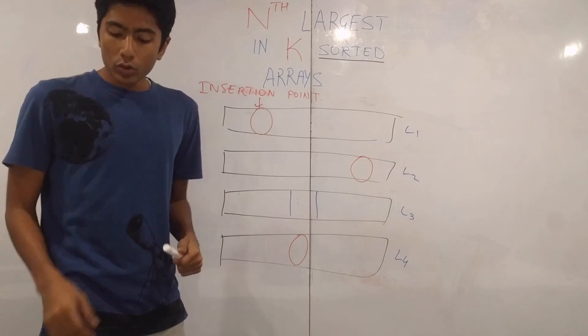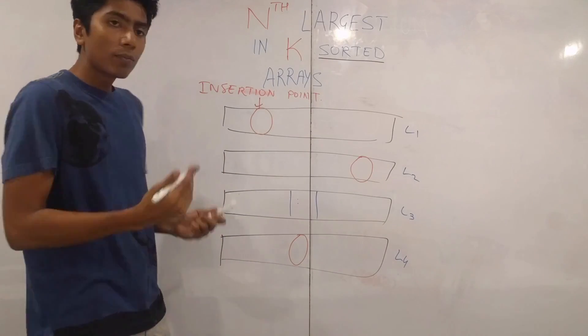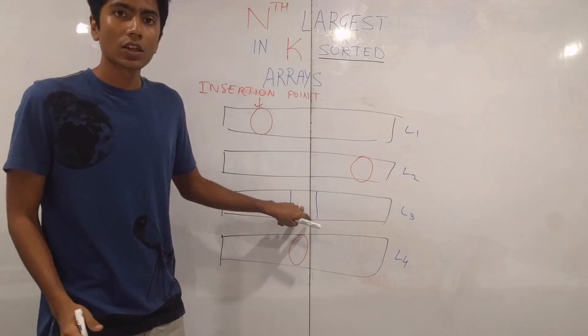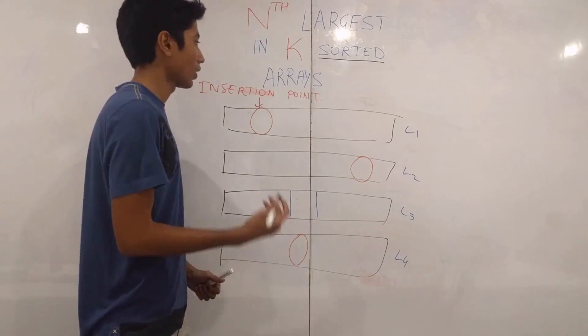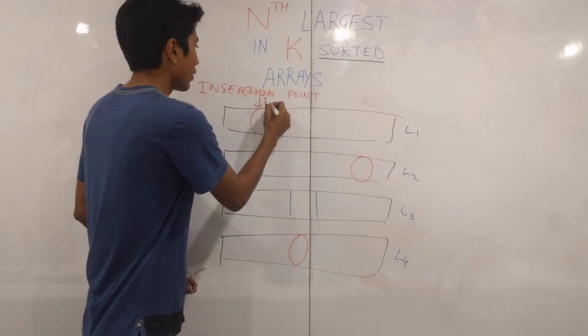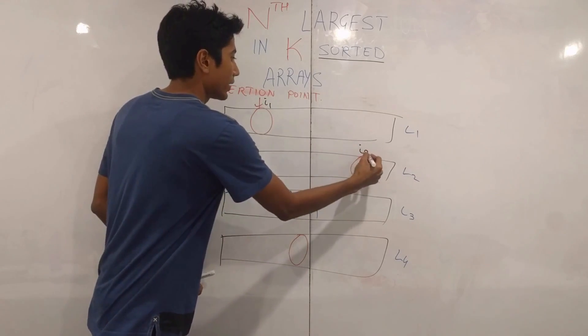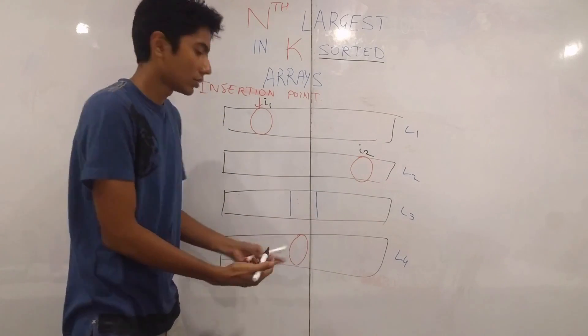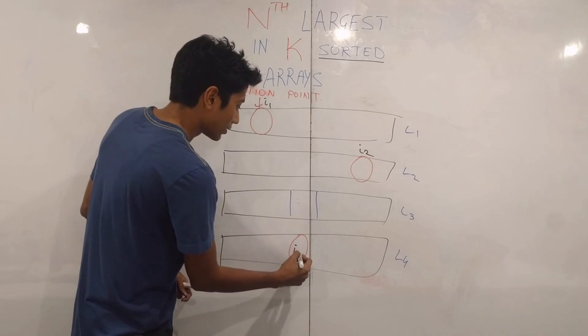So these are the positions you got using binary search on these three arrays. Now what we are going to do is we are going to take the sum of all indexes less than and greater than this index for all the arrays. So let's say this index is i1. This is i2. This of course is our source. So we don't take that and this is i3.